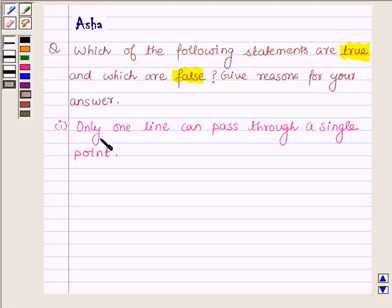The first one is: only one line can pass through a single point. So let us consider a point. Let this point be A. Now let us see how many lines can be drawn from this point.